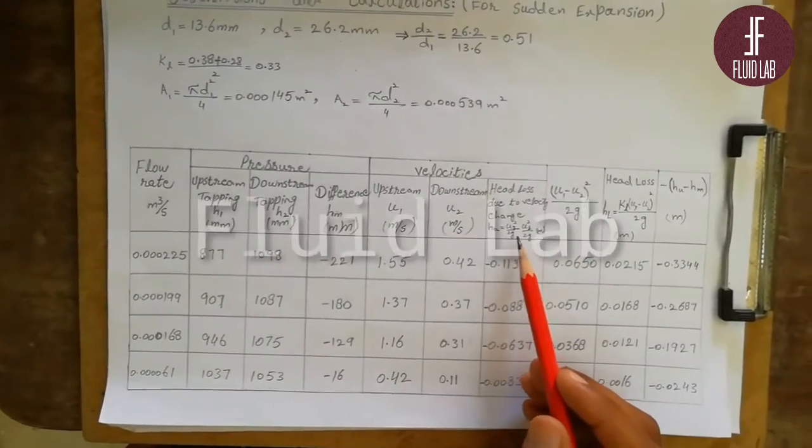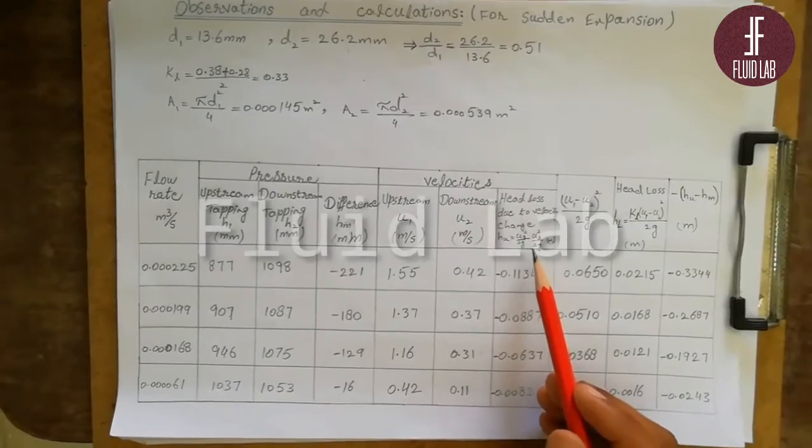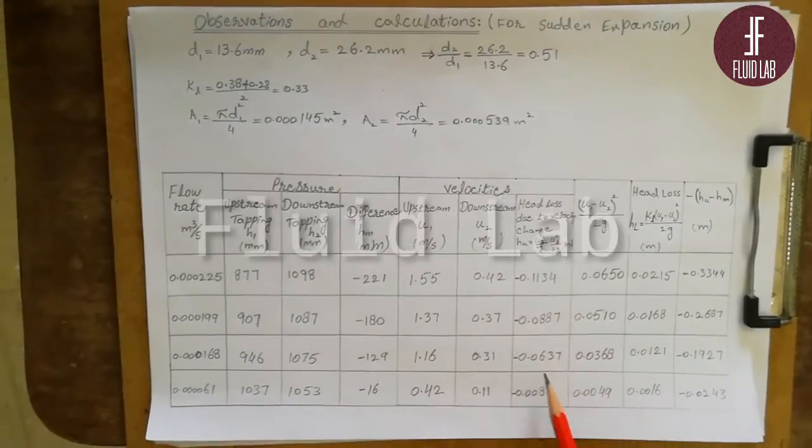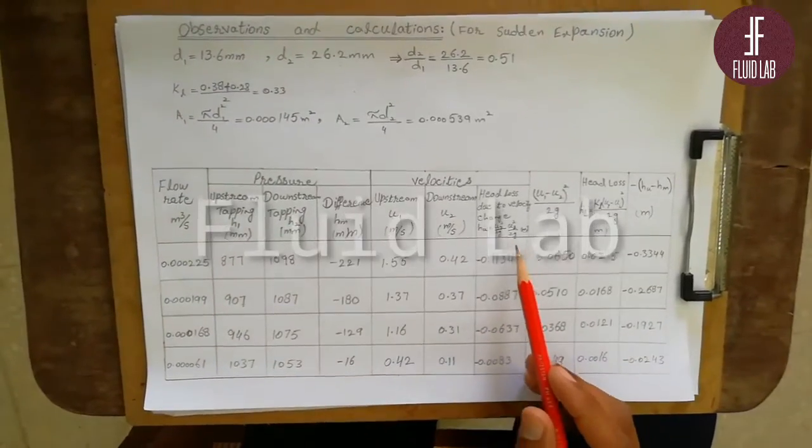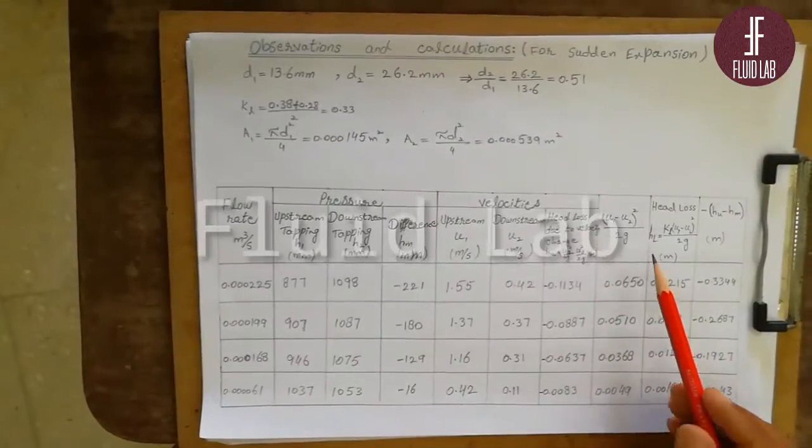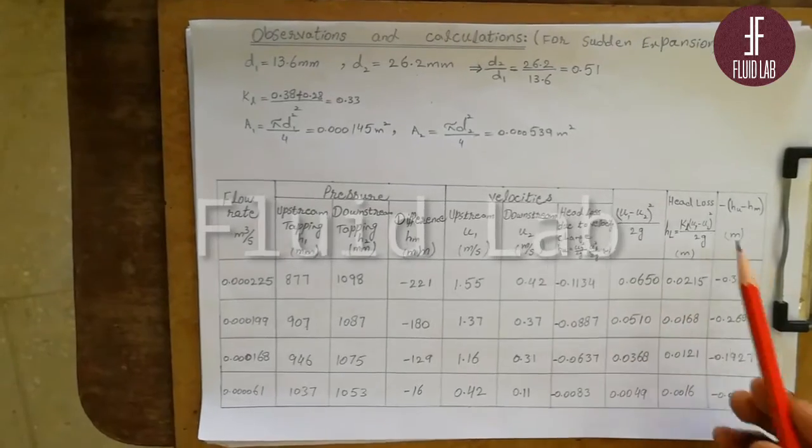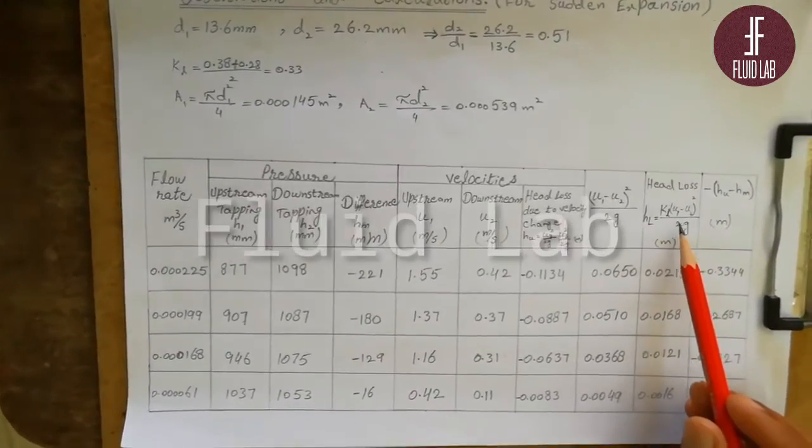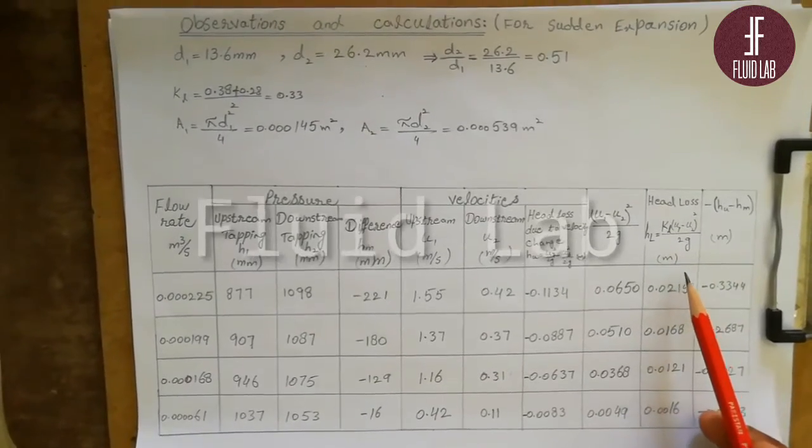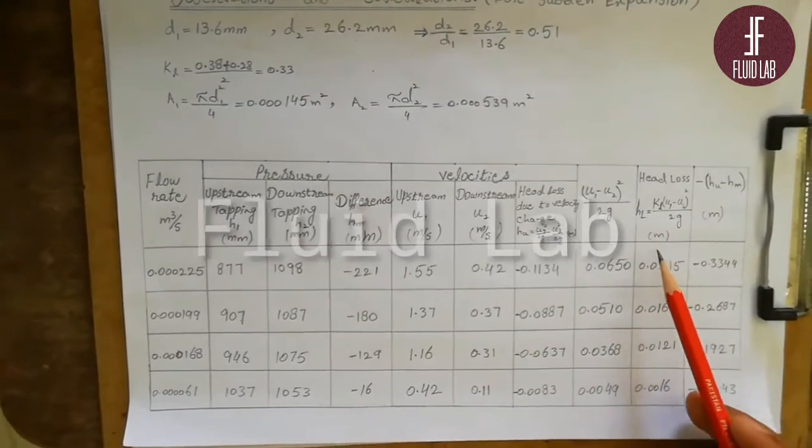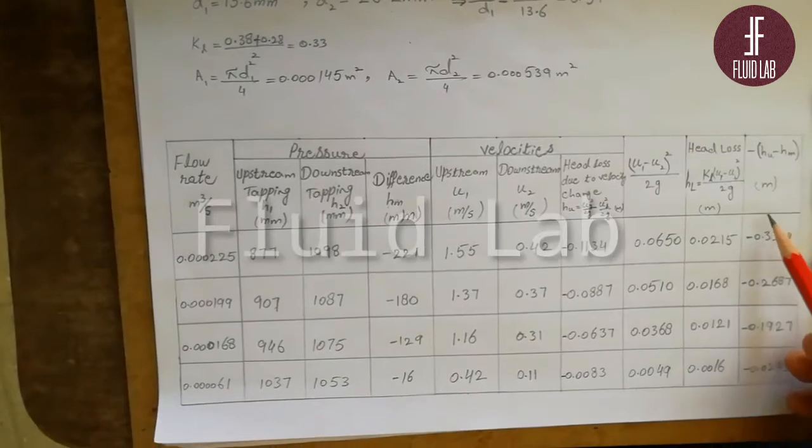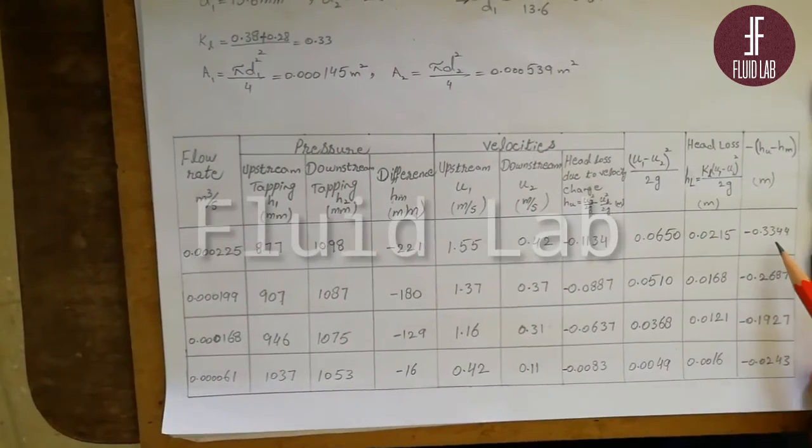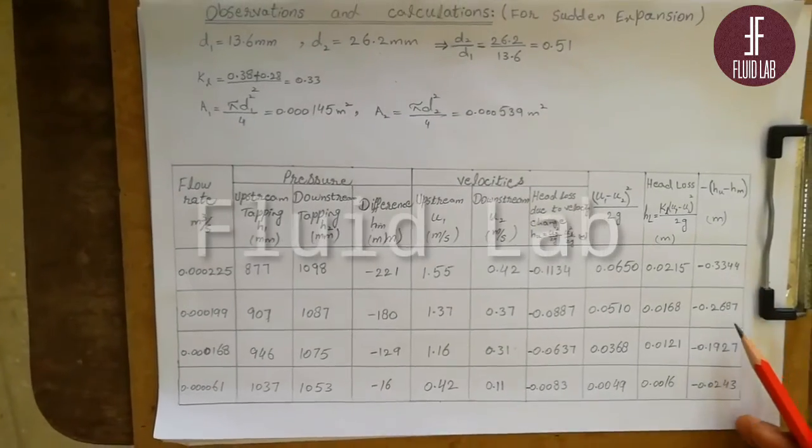Head loss due to velocity change is U2 squared divided by 2G minus U1 squared divided by 2G. These values are negative. Next column is the square of difference of velocity head and the last column is head loss. We use KL value, U1, U2 and gravitational acceleration to calculate head loss. Last column is the negative difference of pressure head and velocity head. These values are also negative.